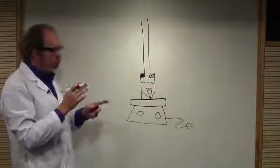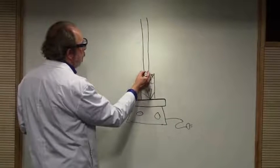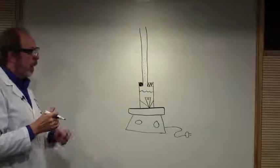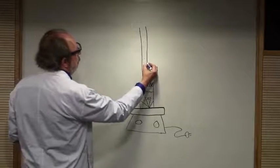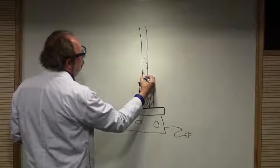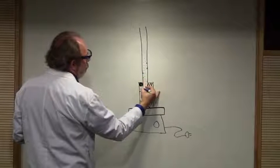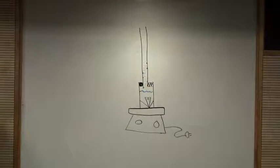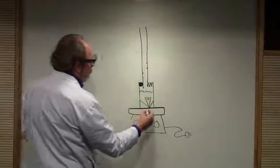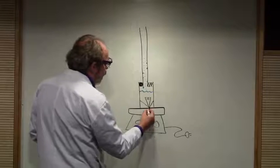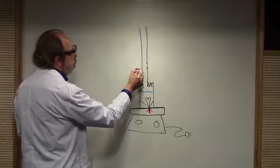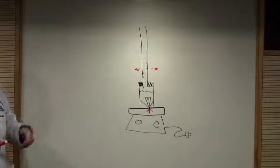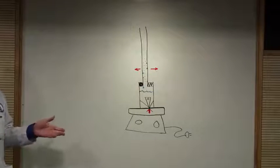The liquid will boil and vapor will travel up the condenser. It will cool inside the condenser and eventually droplets of liquid will form on the sides, falling down by gravity and dripping back into the container. Heat energy comes in from the heater and exits through the condenser. This boiling and condensing will continue as long as the condenser is working and the hot plate is on.